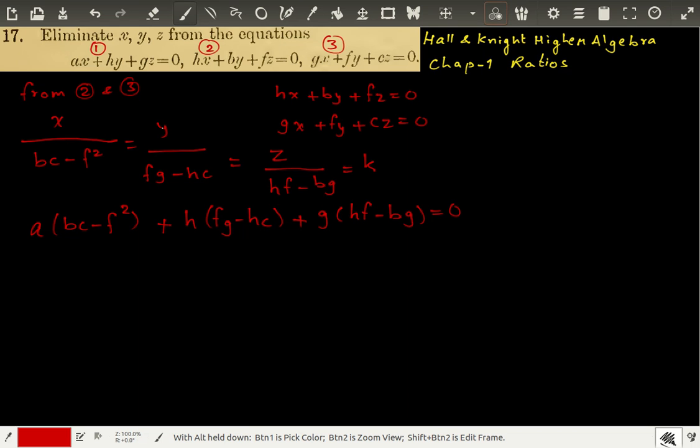So, this is the eliminant. This is the eliminant of these three equations. We can simplify it further if we can. It is abc minus af squared plus fgh minus h squared c plus fgh minus h squared c, fgh minus g.